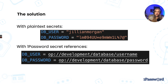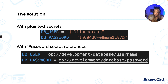In our environment file, instead of writing out plain text credentials, we can replace them with a reference to where these secrets can be found in 1Password. We prepend the reference with op:// so that the 1Password CLI knows what content to replace. In my example, 'development' is the 1Password vault, 'database' is the item, and 'username' and 'password' are the fields assigned to DB_USER and DB_PASSWORD variables respectively.